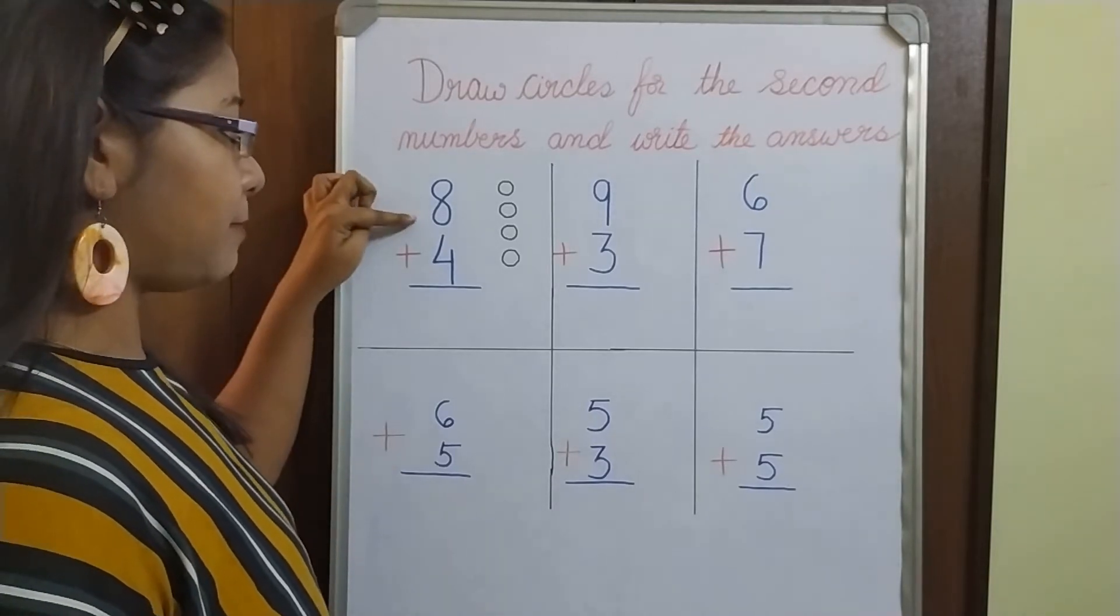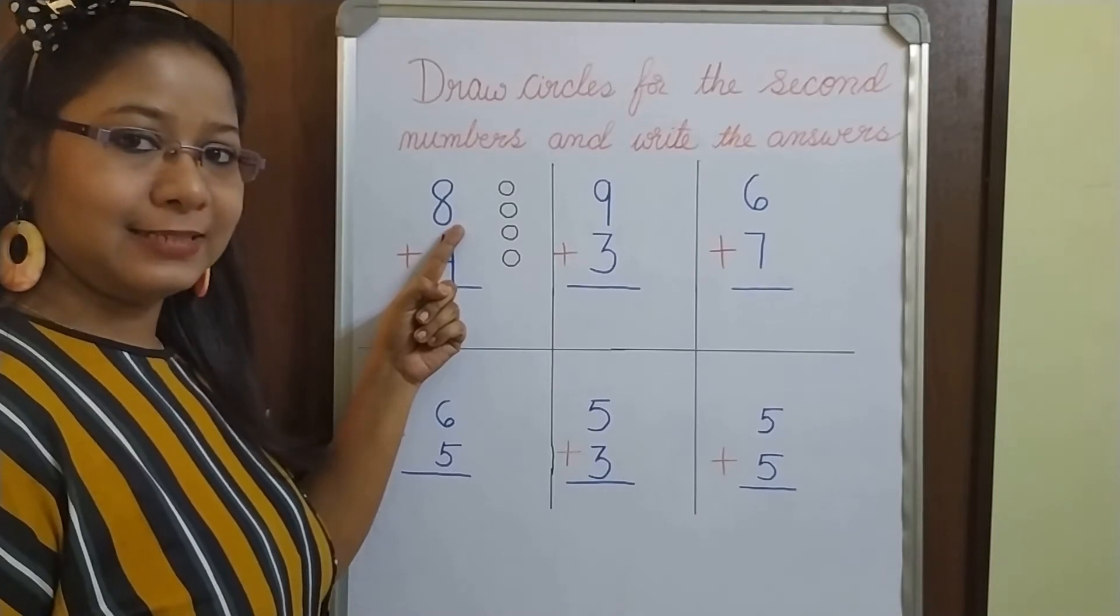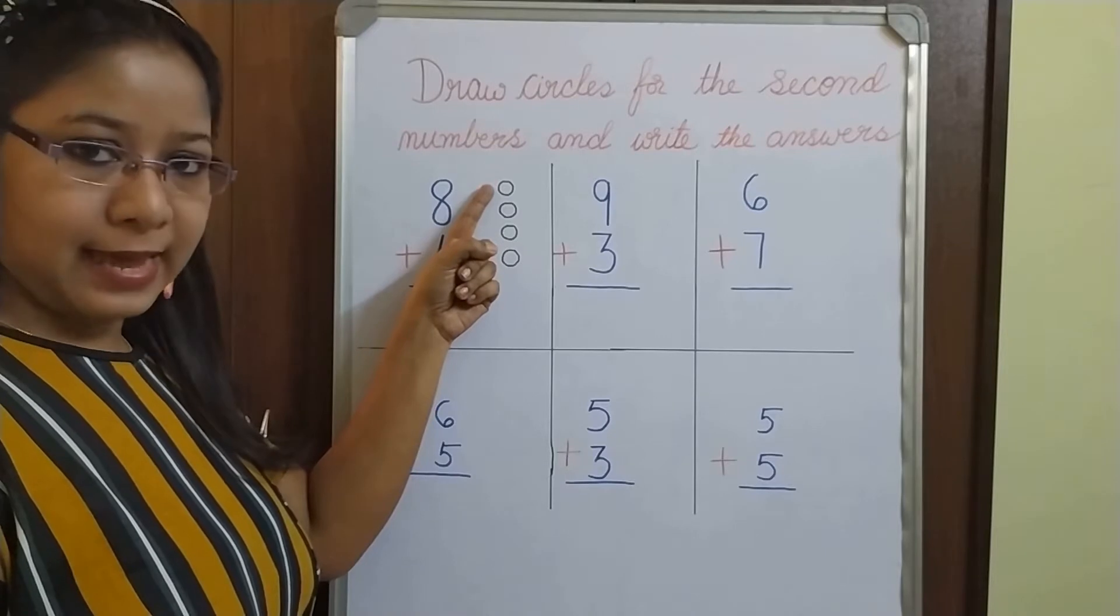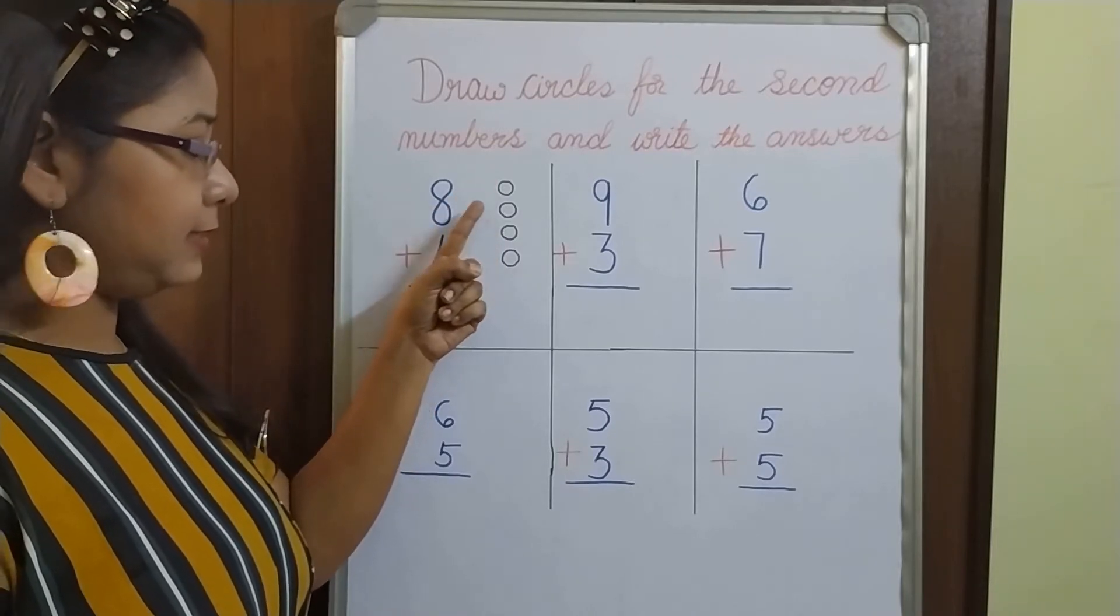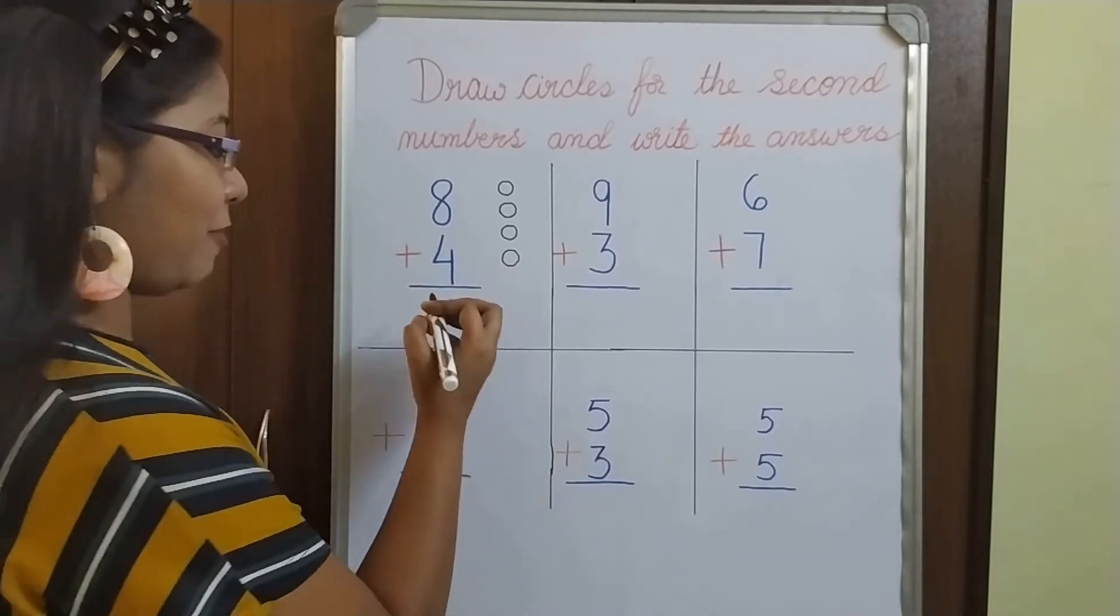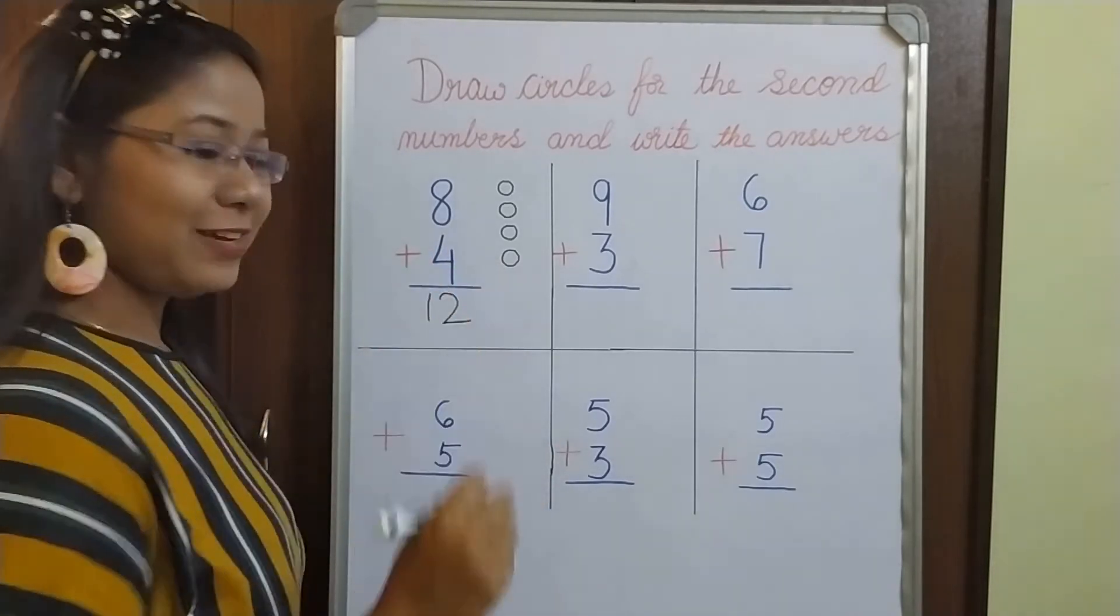Like, first number is 8. And after 8, let's count. 9, 10, 11, 12. So our answer will be 12.